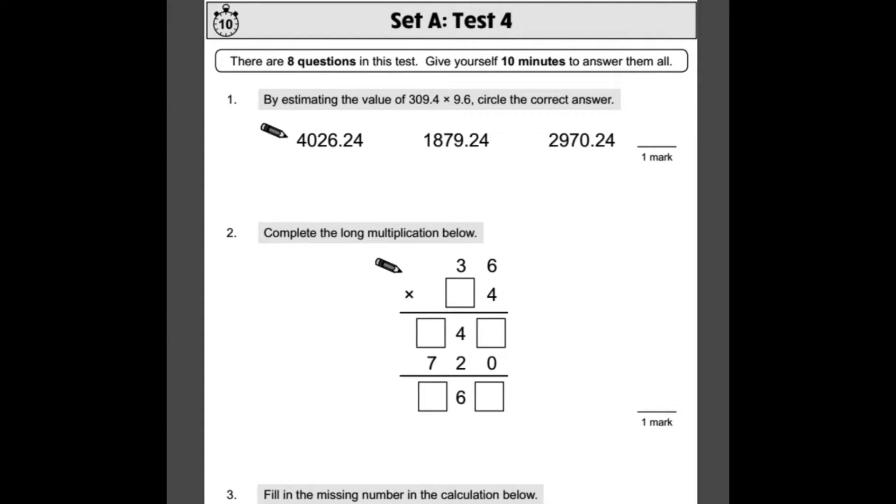Welcome to my guide to the CGP Set A Test 4 for maths paper. Number one, by estimating the value of 309.4 times 9.6, circle the correct answer. You don't have to do any calculation for this as it says estimate, and there are obviously only three answers to choose from.